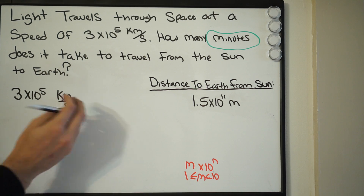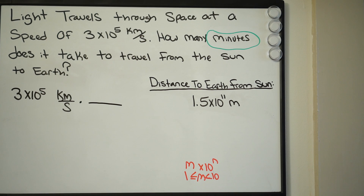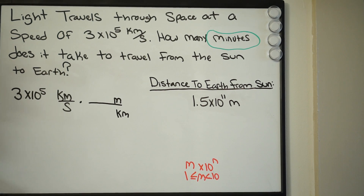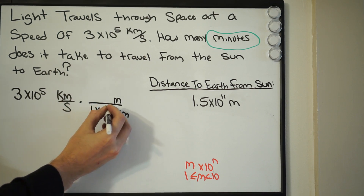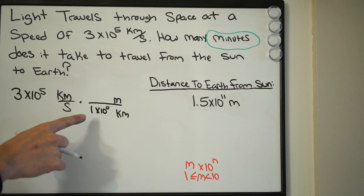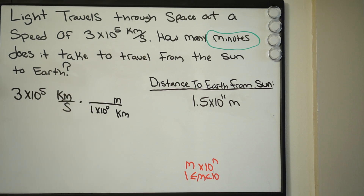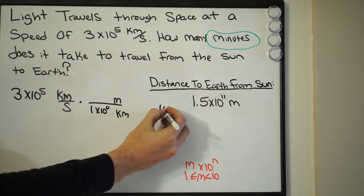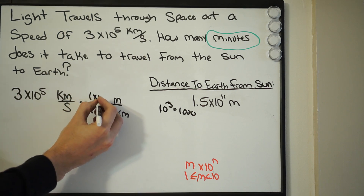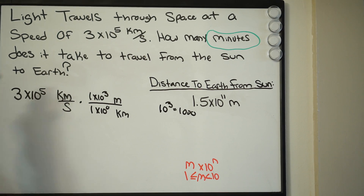First, we're going to convert kilometers into meters. We know that there are 1,000 meters in one kilometer. So we put kilometers on the bottom and meters on the top. We write 1 kilometer as 1 times 10 to the 0 power, since anything to the 0 power is 1. And 1,000 meters can be written as 1 times 10 to the 3rd power, since 10 to the 3rd equals 1,000. So we're staying consistent and keeping everything in scientific notation.